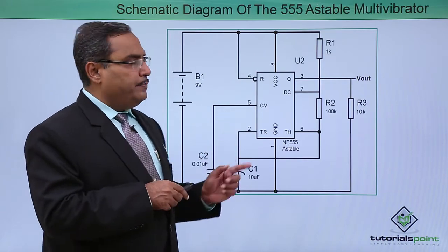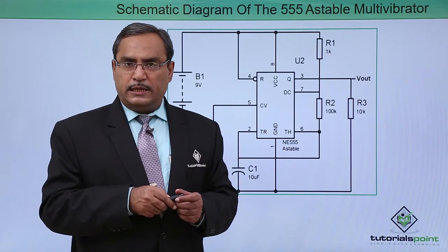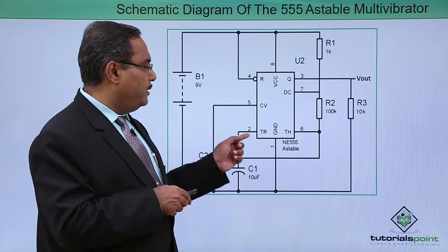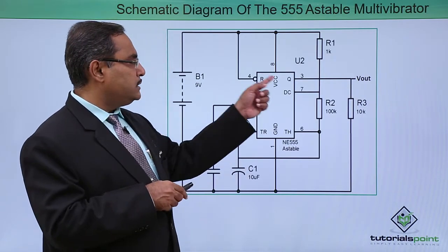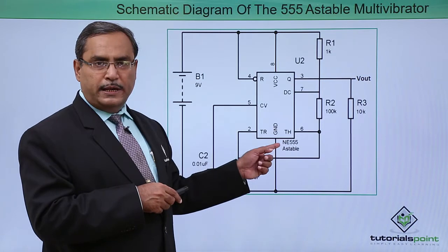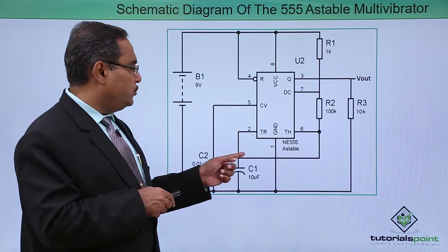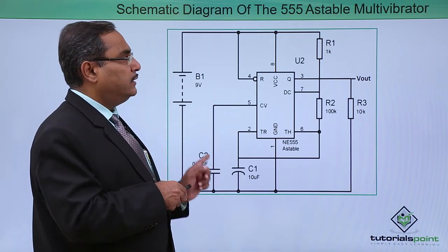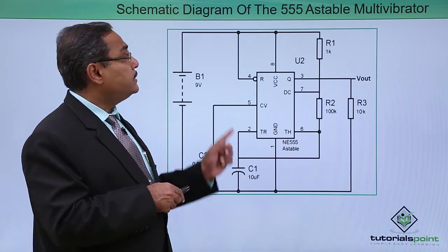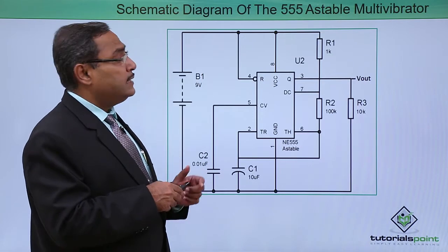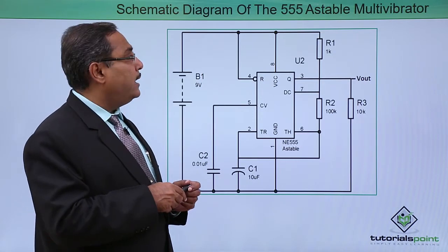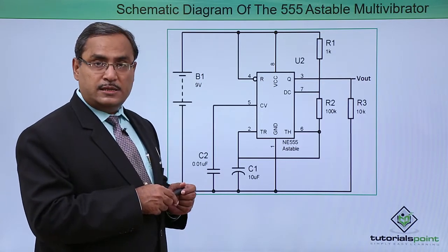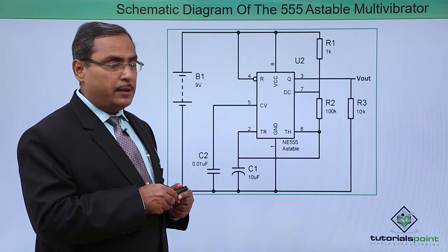Here we have the respective pin-level diagram with pin numbers for this 8-pin DIP IC. The pins are: pin 1 ground, pin 2 trigger, pin 3 output, pin 4 reset, pin 5 control voltage, pin 6 threshold, pin 7 discharge, and pin 8 power supply. This is the schematic diagram of the 555 astable multivibrator.